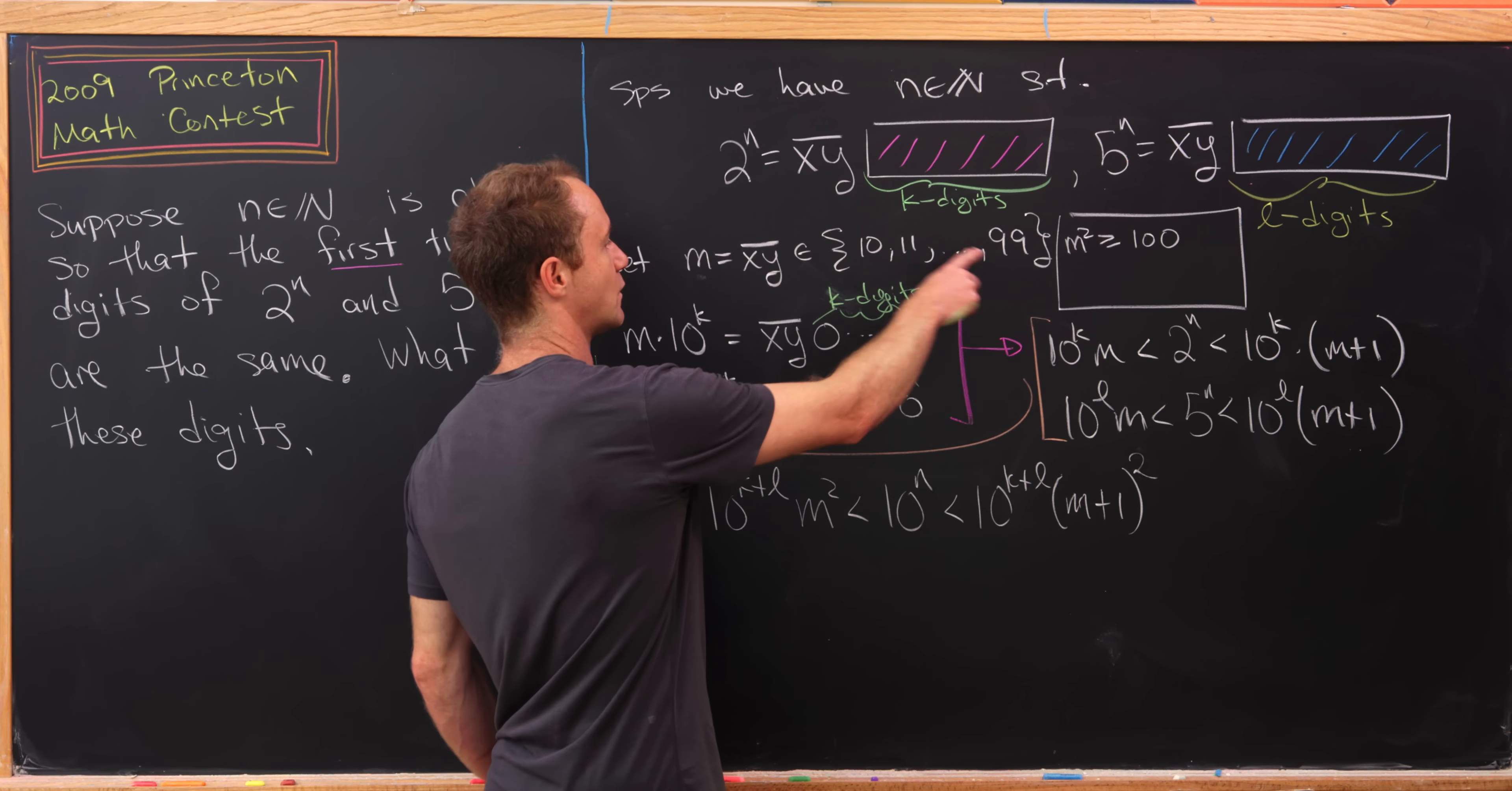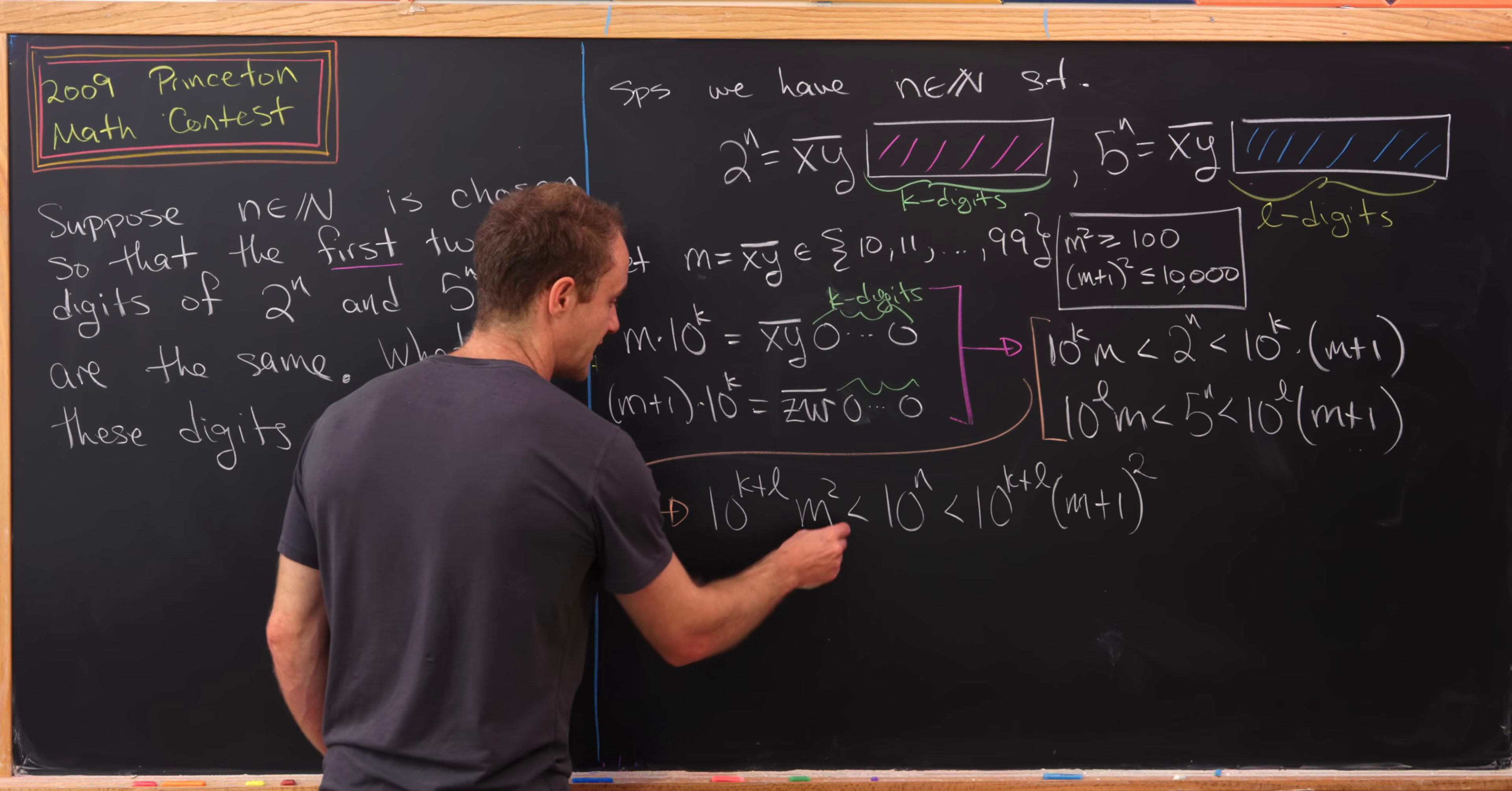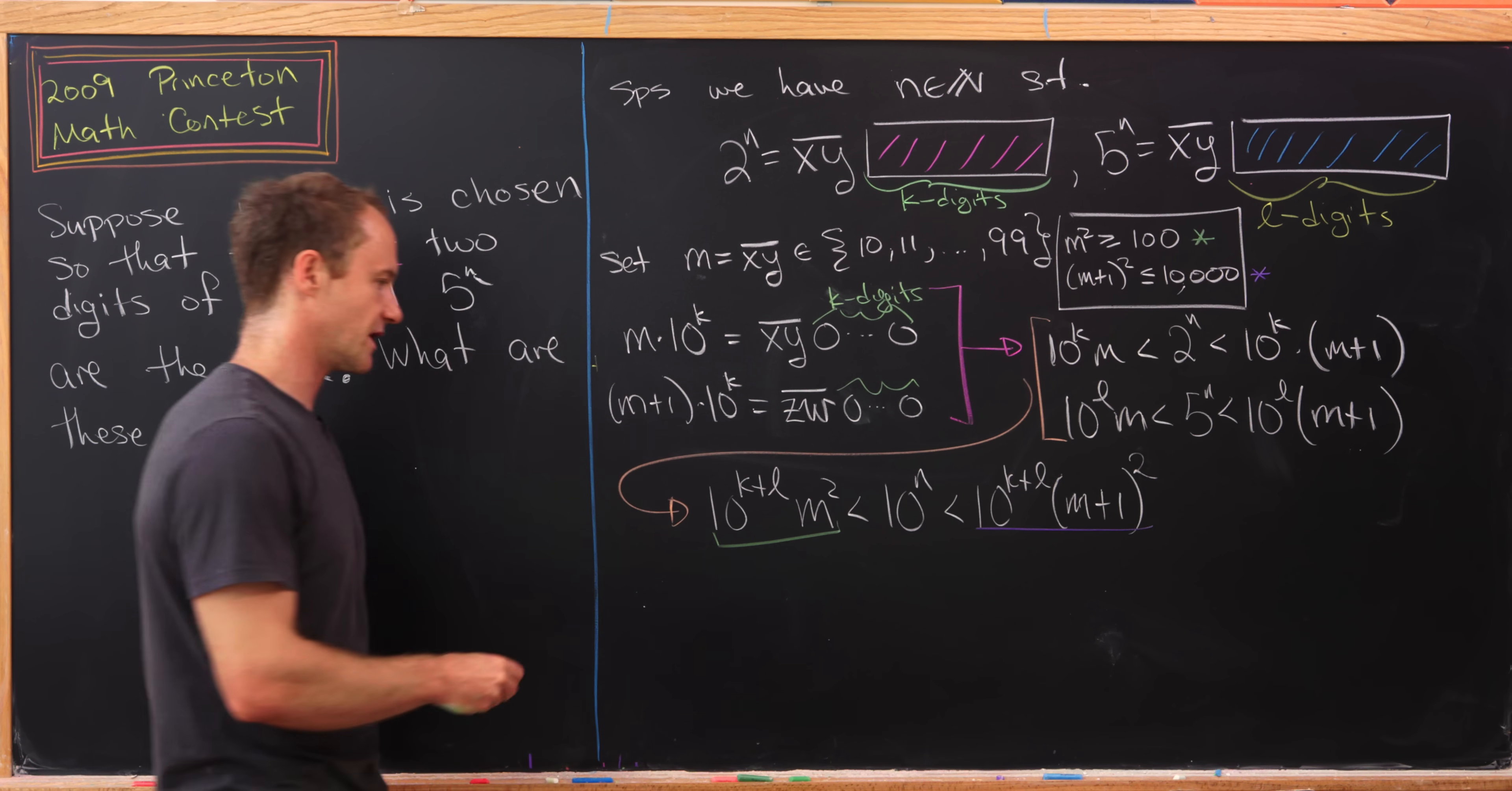Then m+1 is less than or equal to 100, which means (m+1)^2 is less than or equal to 100^2, or in other words 10,000. Now we can replace this term with the green star and this term with the purple star, because the inequalities are going in the right direction.